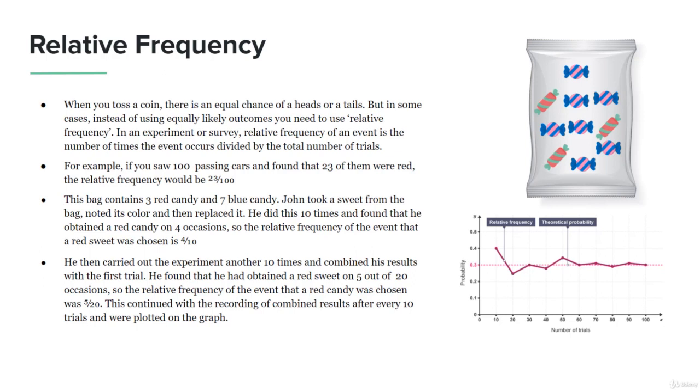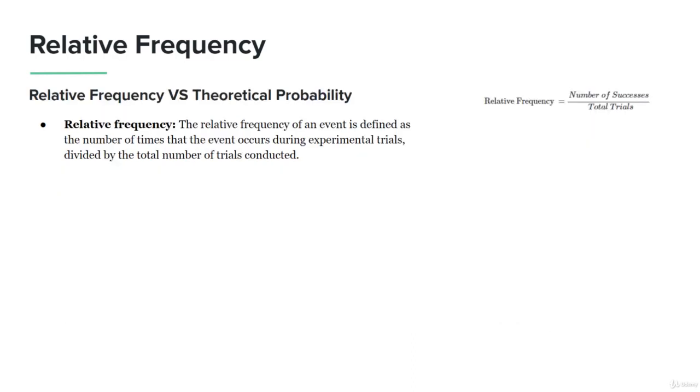This continued with the recordings of combined results after every 10 trials, and were plotted on the graph. So we have the formula: relative frequency equals number of successes divided by total trials.